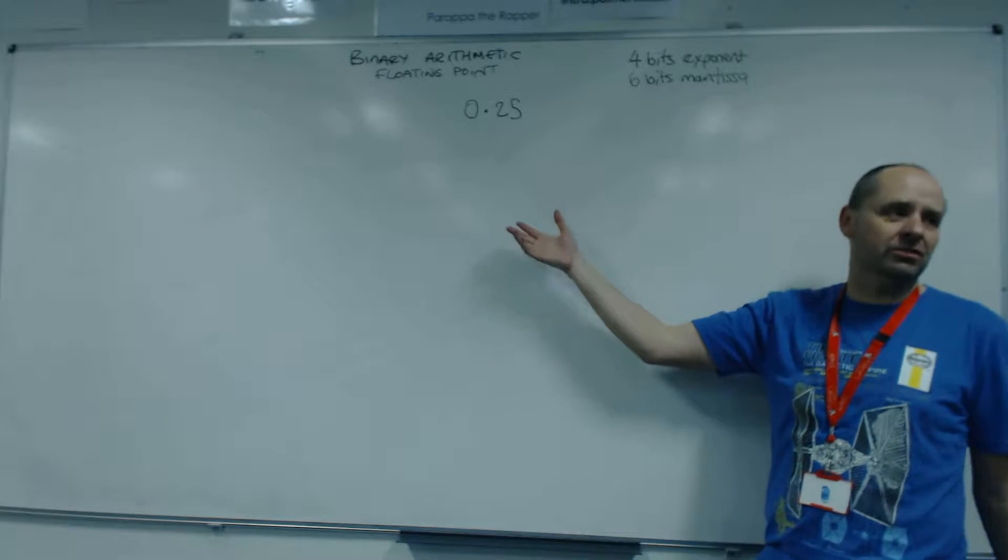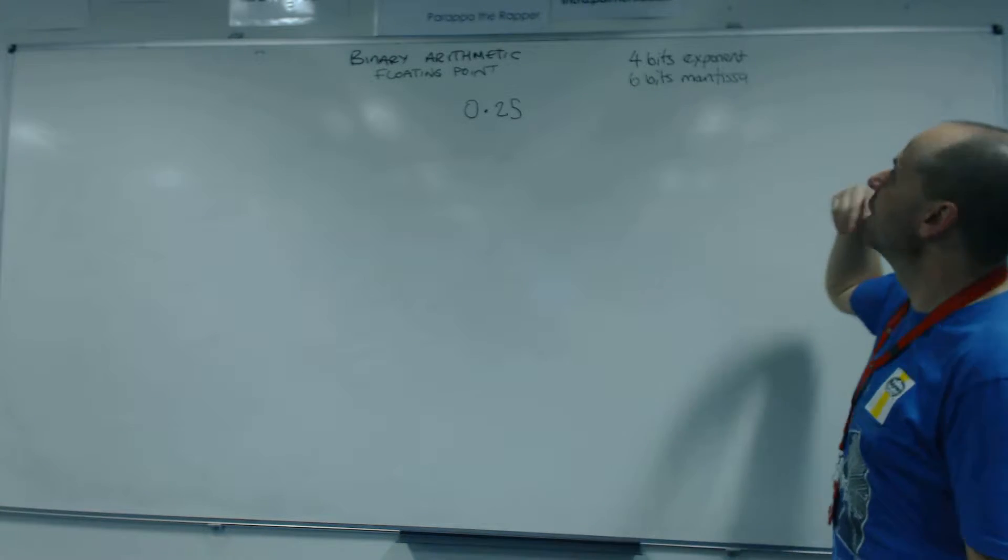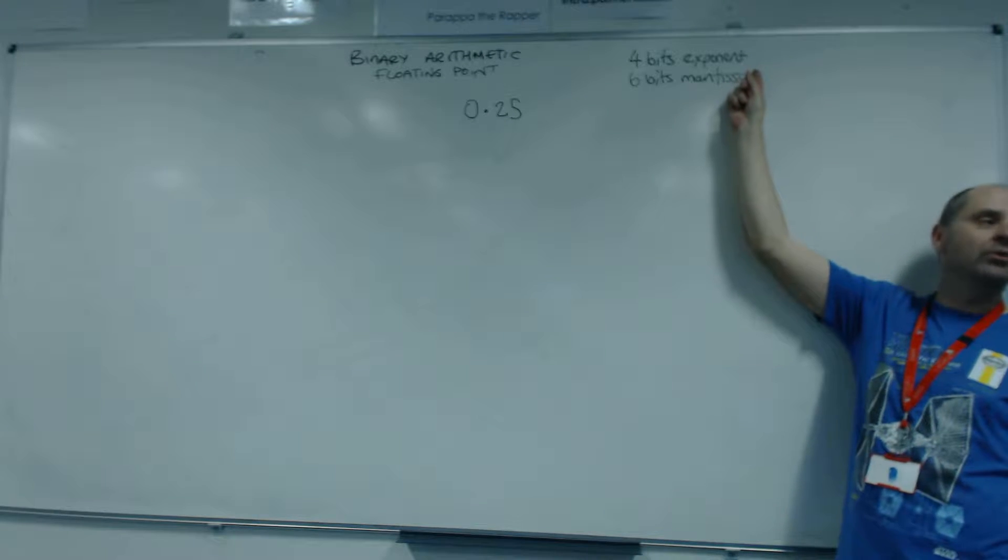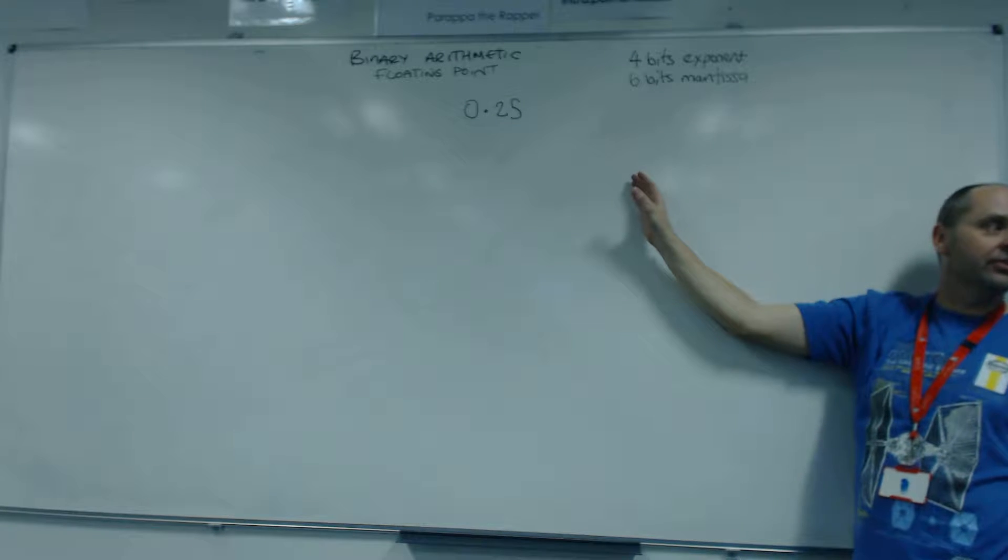This is just a recap and then we'll do some arithmetic with this. Right, so the mantissa is the detail of the number. The exponent represents the size of the number.